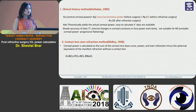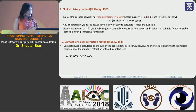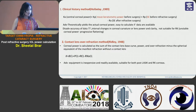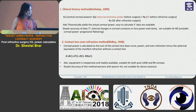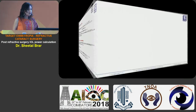The second method is the contact lens over-refraction method described by Ridley. The corneal power is calculated as the sum of the base curve of the contact lens, the power of the contact lens, and over-refraction, minus the spherical equivalent of the manifest refraction without a contact lens. The advantage is that the equipment is inexpensive, contact lenses are readily available, and it is suitable for post-LASIK and RK corneas. The disadvantage is that accuracy worsens with poorer visual acuity, so it is not suitable for mature or dense cataracts.